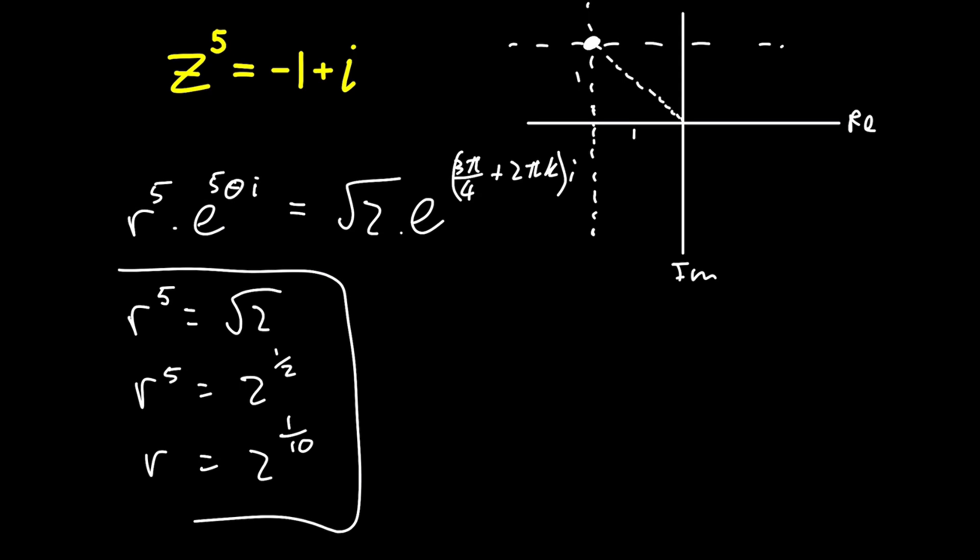Now we must equate the arguments. We have five theta equal to three quarters pi plus two pi k. And this k here is an element of integers, which means we can substitute in any integer for k.